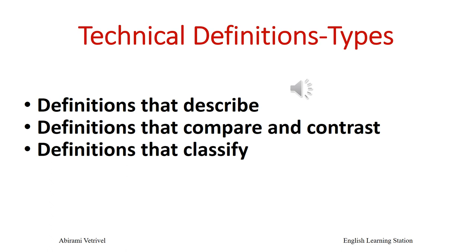There are three types of technical definitions: definitions that describe, definitions that compare and contrast, and definitions that classify. Now let us learn each one in detail.